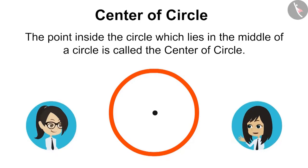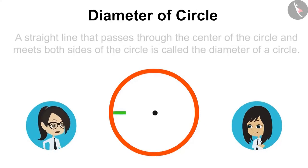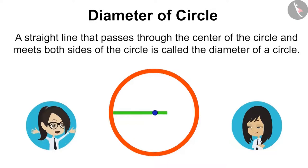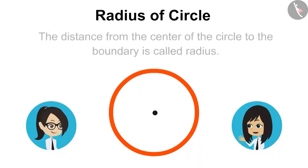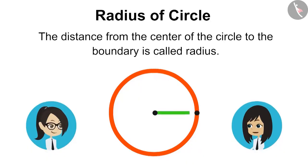Now can you talk about diameter? A straight line that passes through the center of the circle and meets both sides of the circle is called the diameter of circle. Now remains the radius. You tell me about it. The distance from the center of the circle to the boundary is called radius.